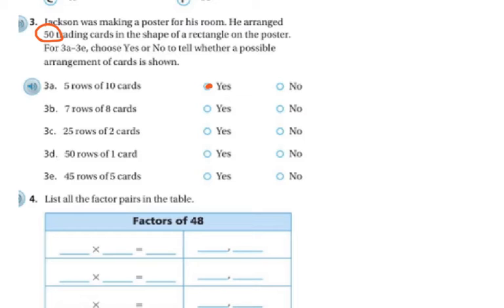7 rows of 8 cards, well 7 times 8 is not 50, so that's no. 25 rows of 2 cards, 2 times 25 is 50, so yes. 50 rows of 1 card, 50 times 1 is 50, so yes. 45 rows of 5 cards, that does not make 50, so the answer is no.